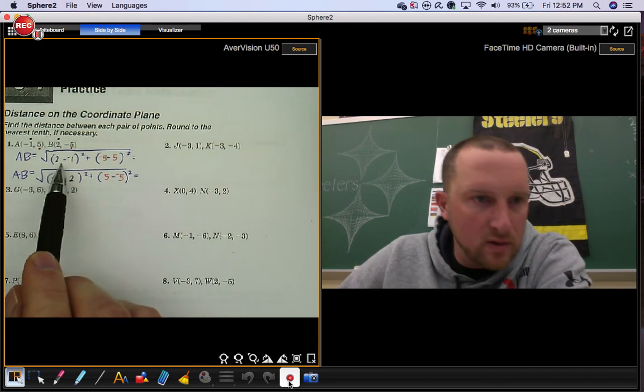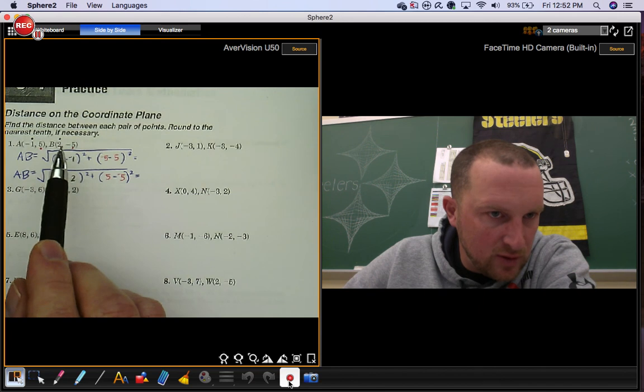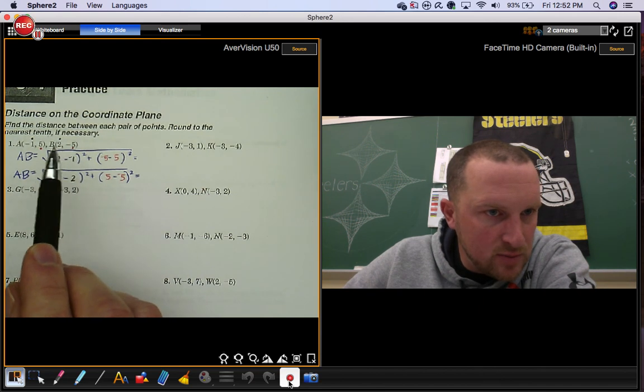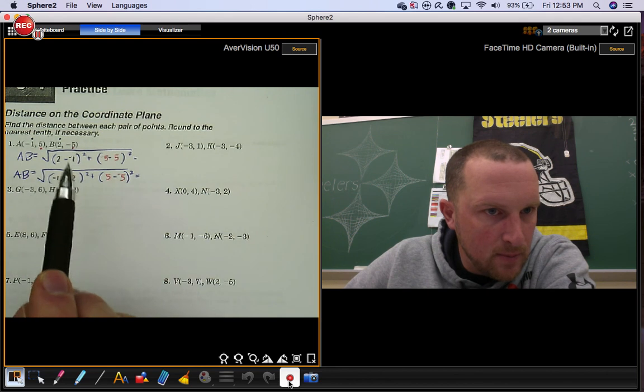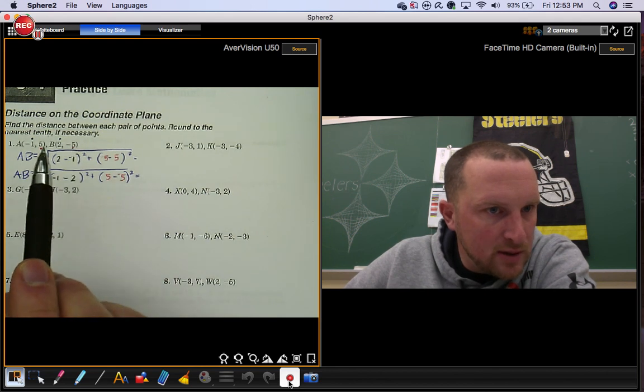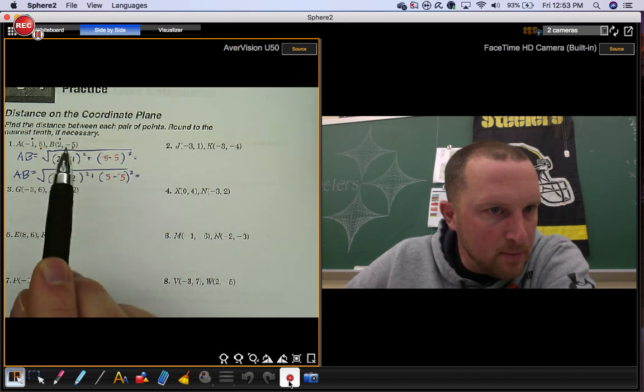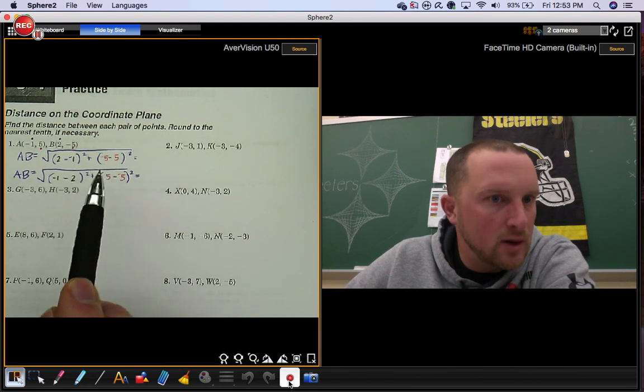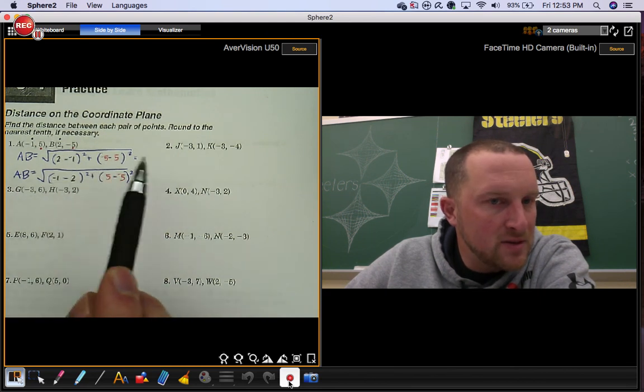So here's one way to do it. This is what the formula says now. You take your x sub 2 minus your x sub 1, 2 minus negative 1, square it. Then do y sub 2 minus y sub 1, negative 5 minus positive 5, square it. We're going to type this in and get an answer.